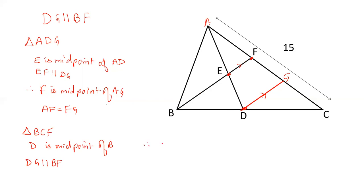So G is midpoint of CF. That is midpoint theorem. If a line is drawn from the midpoint of a side of a triangle parallel to another side, it will bisect the third side. That means G is midpoint of CF, so FG is equal to GC.